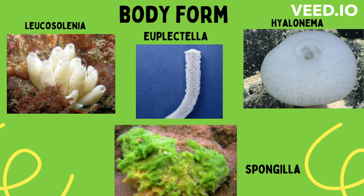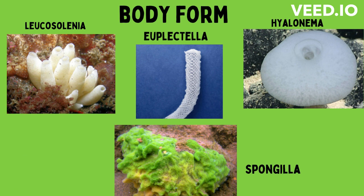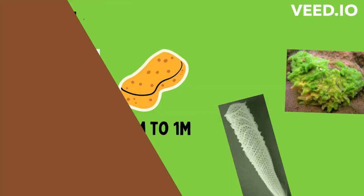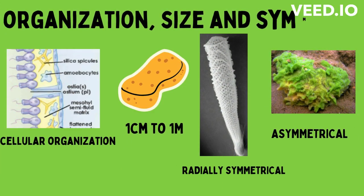Sponges vary greatly in their body form and may be vase-like, for example Leucosolenia; cylindrical, Euplectella; spherical, Hyalonema; or an irregular mass of branches, for example Spongia. They have cellular organization — multicellular but showing no coordination, a cell-aggregate plan. Their size ranges from one centimeter to one meter. Most sponges are radially symmetrical, for example Euplectella, but some are asymmetrical, like Spongia.